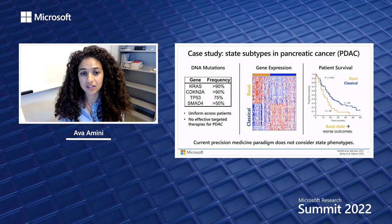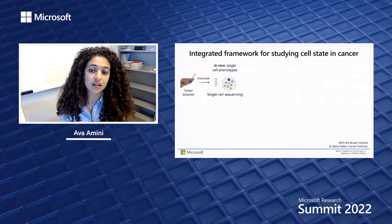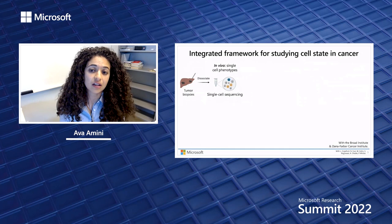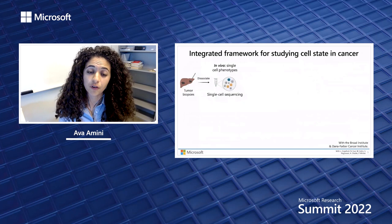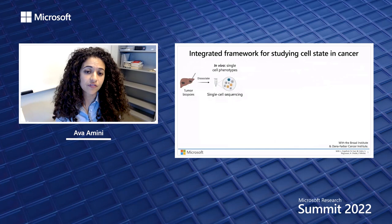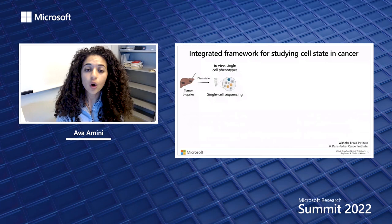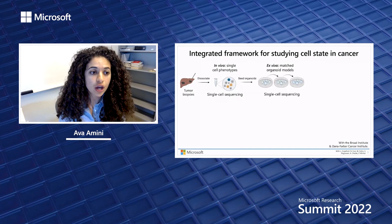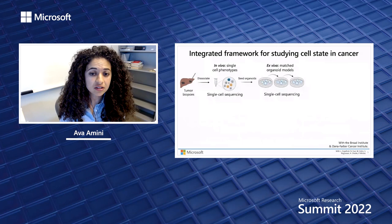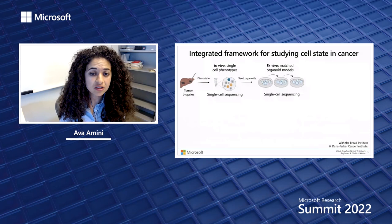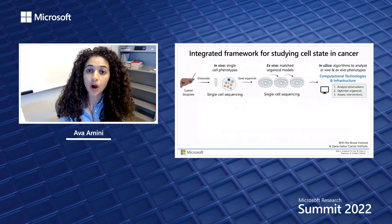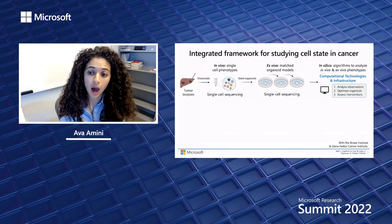Our current precision medicine paradigm fails to even consider these states in how we think about managing treatment and assigning therapy. To address this, we have recently collaborated with experimental and clinical colleagues at the Broad Institute and the Dana-Farber Cancer Institute to develop an integrated framework to study and model tumor cell states ex vivo. We've established a workflow that allows us to go directly from tumor biopsies profiled using single cell sequencing and omics technologies, to the establishment of matched lab organoid models made up of tumor cells that can be grown, tested, and profiled.